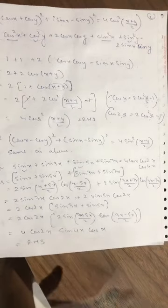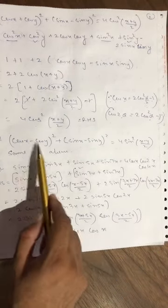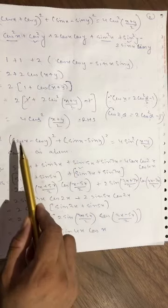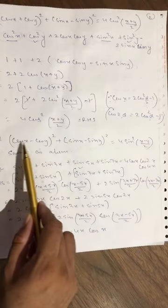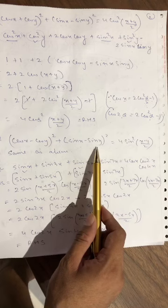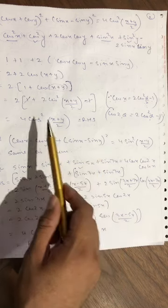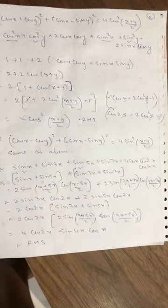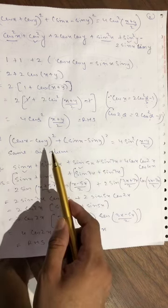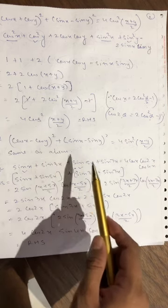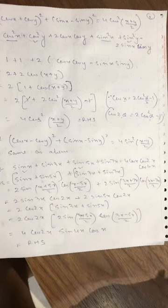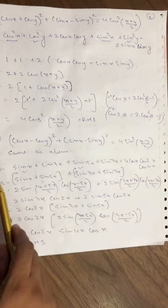Next question: same sum but with a minus sign — apply (a−b)² and the same formula. Same as the above question. If you don't understand, kindly ask me and I will give you the solution.